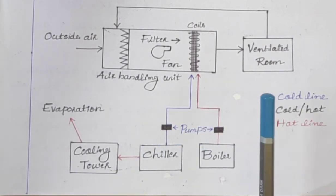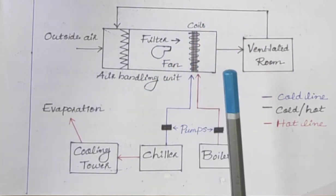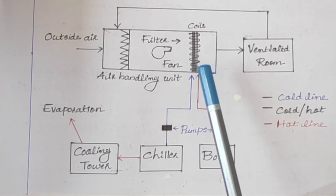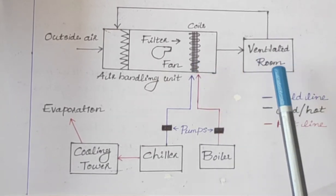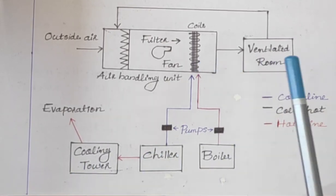The system can either heat or cool the coils inside according to the need. If we want to heat the space, a boiler is used to heat the coils, and if we want to cool the space, the chiller and cooling tower help to cool the coils.